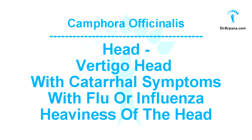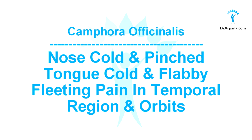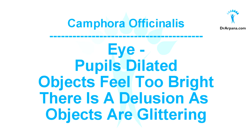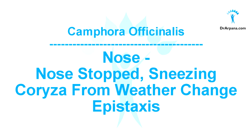The nose is cold and pinched, the tongue is cold and flabby, and there are fleeting stitches in the temporal region and in the orbits. In the eyes, there is a delusion of seeing glittery flashes, the pupils are dilated, and objects feel too bright and glittering. The nose is stopped with sneezing and coryza from change of weather, and there is persistent epistaxis — that is bleeding from the nose. The face is anxious looking, cold to touch, with sweating.